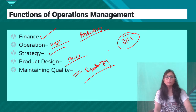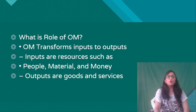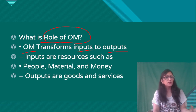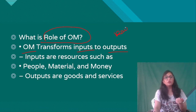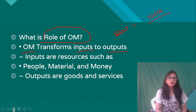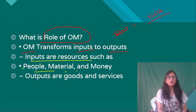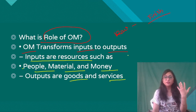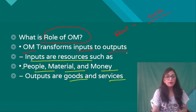So that is the basic foundation regarding operations management. What is the basic role of operations management? It is simple — operations management works to transform inputs into outputs. As I mentioned, raw material is converted into finished products. Inputs are resources such as people, material, and money. Outputs are the goods and services that we provide to our customers.